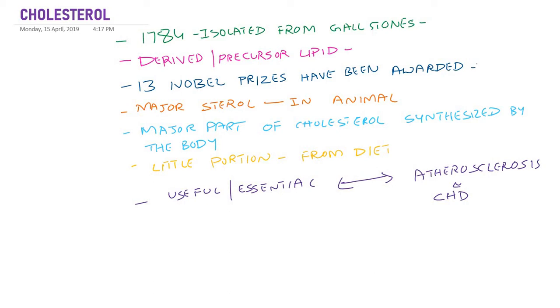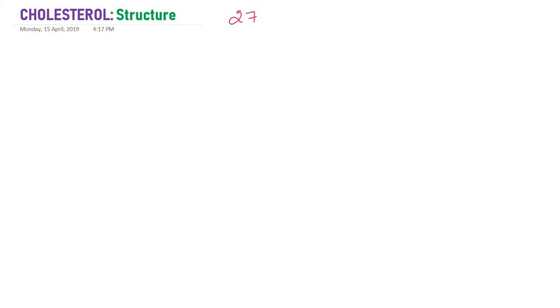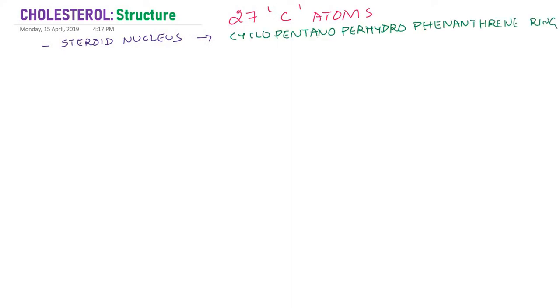Let us study the structure of cholesterol. Cholesterol contains 27 carbon atoms, and it contains a steroid nucleus called cyclopentano-perhydrophenanthrene ring. Let me write the structure of cholesterol.